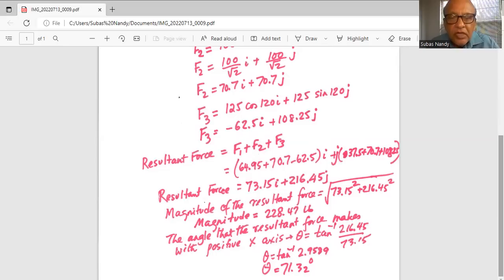Now we need to find out the magnitude of the resultant force which is square root of 73.15 square plus 216.45 square and the magnitude works out to be 228.47 pounds.